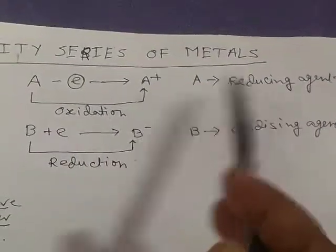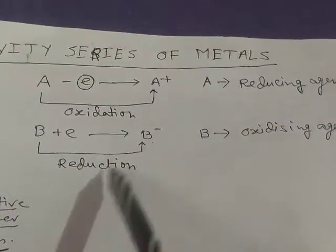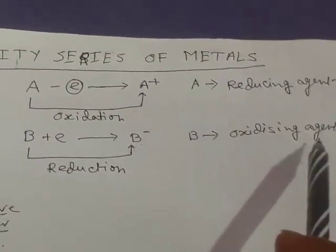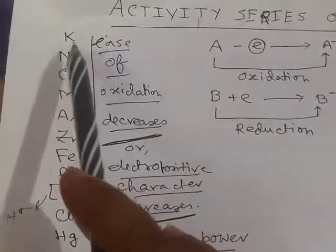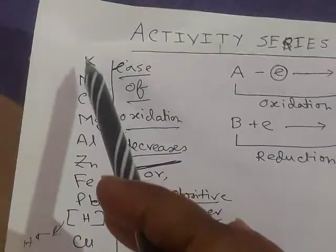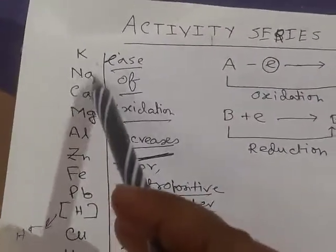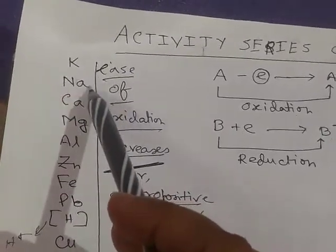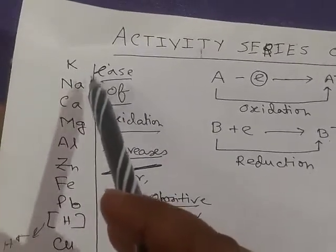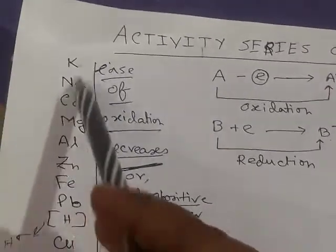In summary, A gets oxidized so it is the reducing agent, and B gets reduced so it is the oxidizing agent — these are opposite terms. Now, coming to the activity series: metals placed at the upper position, like potassium, sodium, and calcium, can easily release electrons from their outermost or valence shell and form positive ions.